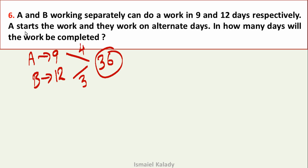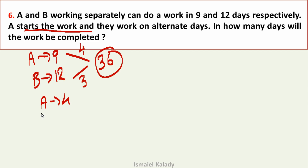A starts to work. Since they work on alternate days: Day 1 A works, Day 2 B works, and so on. In every two days, combined work done is 4 plus 3 = 7 units.